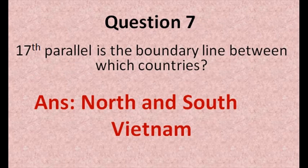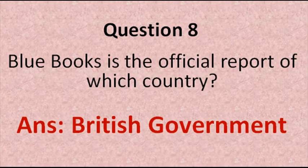17th Parallel is the boundary line between which countries? The answer is between North and South Vietnam. The next question is: Blue Books is the official report of which country? The answer is the British government.